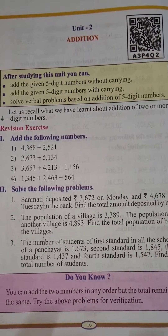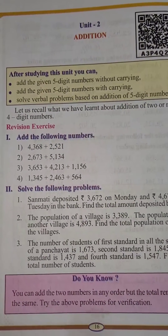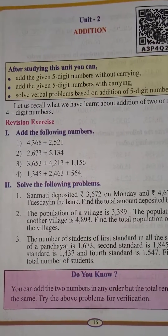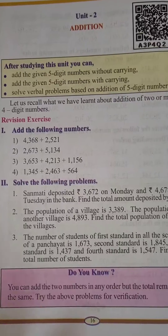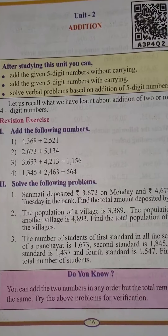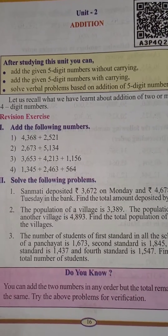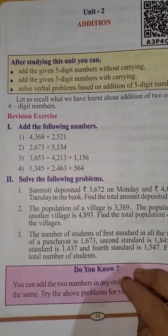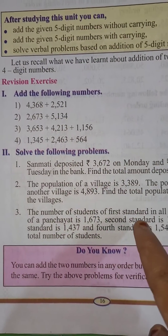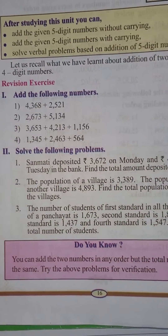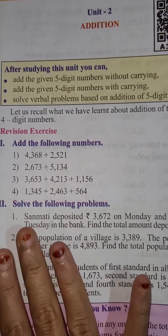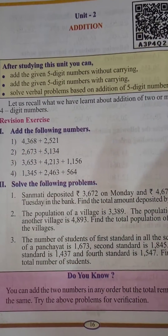Children, in the previous year — in the 4th standard — you have learnt about the addition of 4-digit numbers, isn't it? With carrying, without carrying, and you have also solved verbal problems based on the addition of 4-digit numbers. So in this lesson, you are going to study about 5-digit numbers with carrying, without carrying, and verbal problems based on addition of 5-digit numbers, because you are now in the 5th standard.